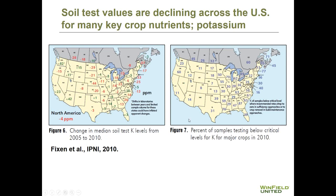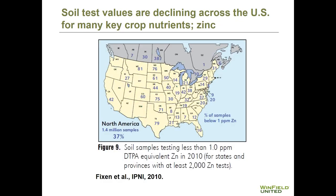Similar thing for potassium — between 2005 and 2010, for many states in the United States there was a decline in soil potassium levels, with a large percentage of samples testing deficient for potassium. And then pulling out an example of a micronutrient — zinc — this looks at the percentage of samples testing less than one part per million, which is typically considered the critical soil test value for zinc. In 2010, here in Illinois, about a fifth of samples submitted were deficient for zinc. Iowa was about 40 percent, and Indiana was about 42 percent.